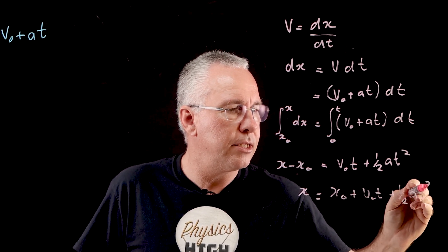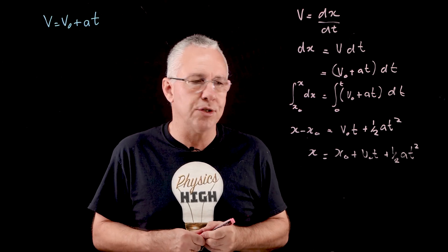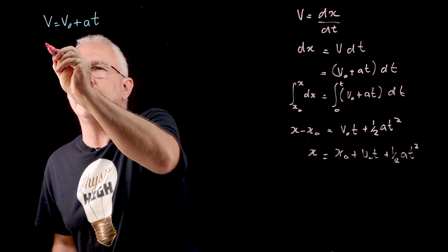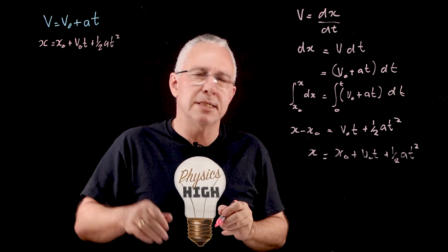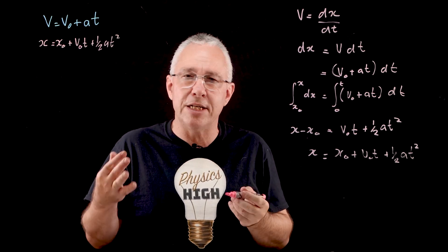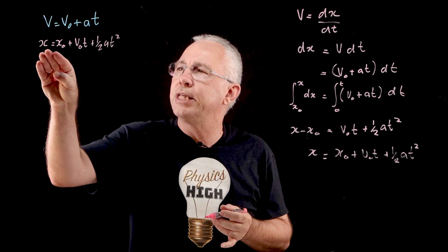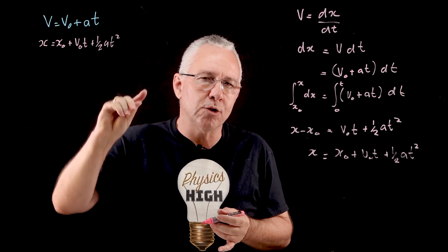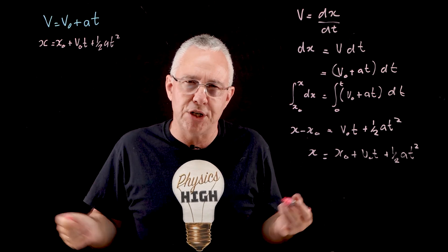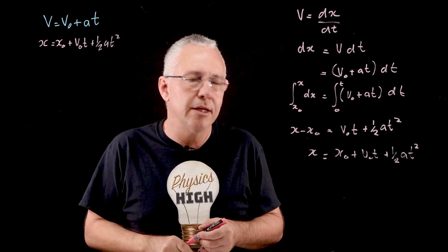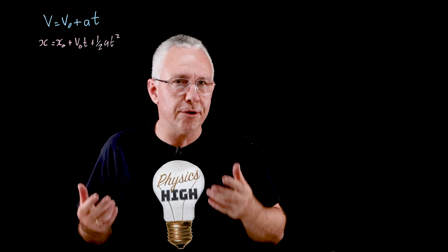Cleaning that up, we get x = x₀ + v₀t + ½at². Often we are interested in the change in displacement, so x₀ drops out and the equation is simply written as x = v₀t + ½at², where x represents the change in displacement.